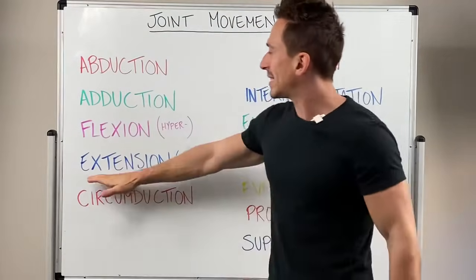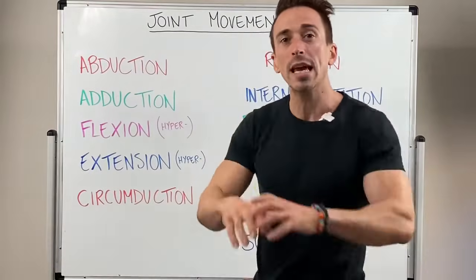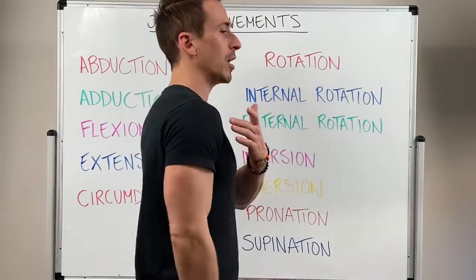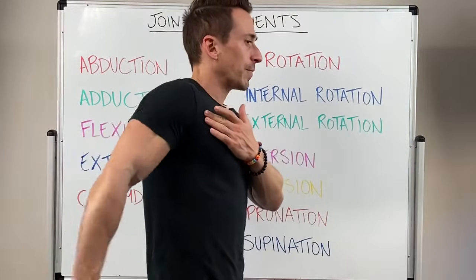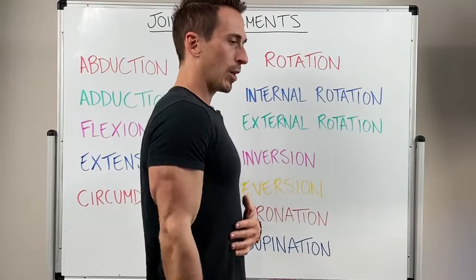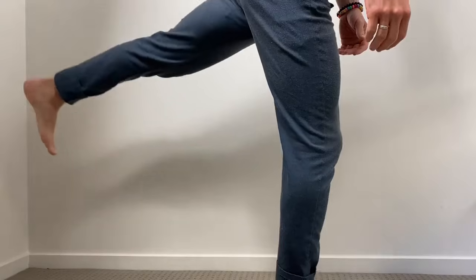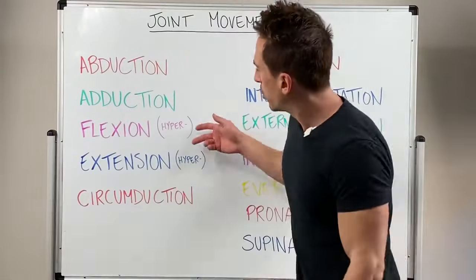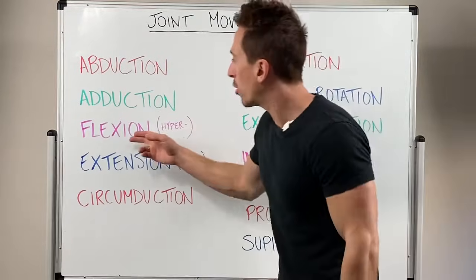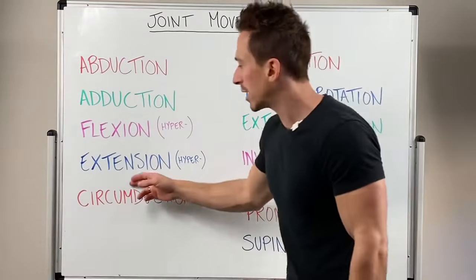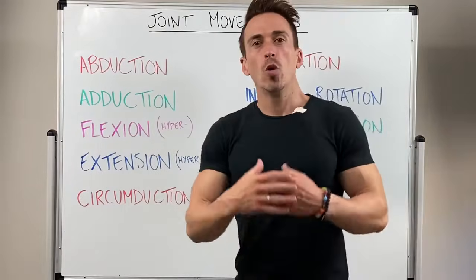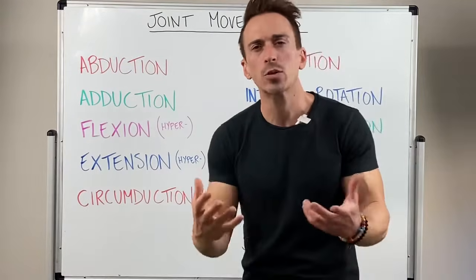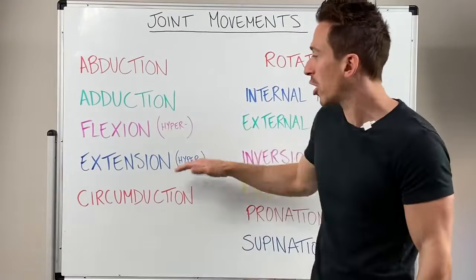Then we can look at extension. Generally, extension is increasing or maximizing the angle at the joint. So we've got shoulder extension, elbow extension, hip extension, and knee extension. You can see that I've put the prefix 'hyper' there — so you can have hyperflexion and hyperextension. This simply highlights that when you flex or extend beyond the normal joint angle, that's what we're referring to as hyperflexion and hyperextension respectively.